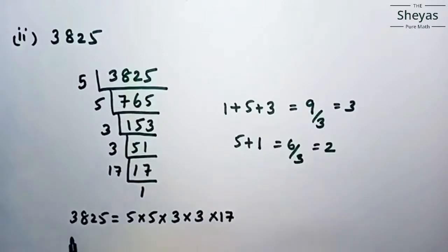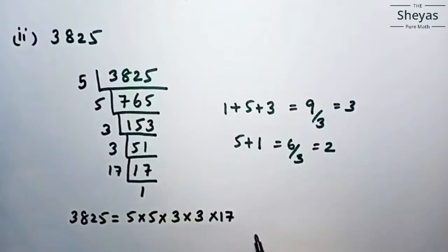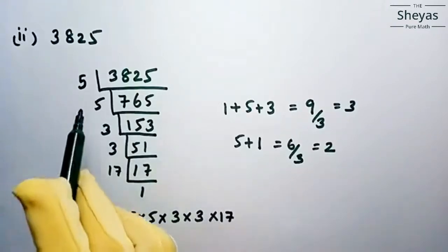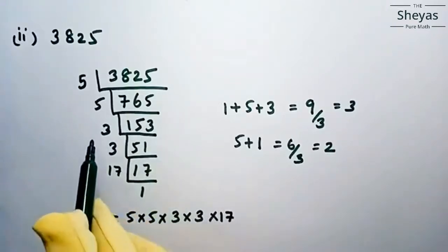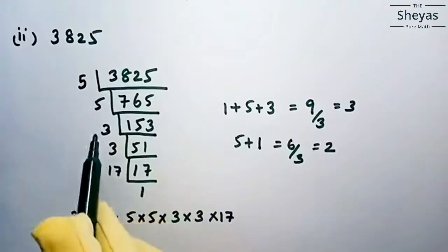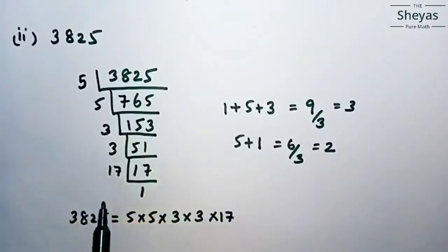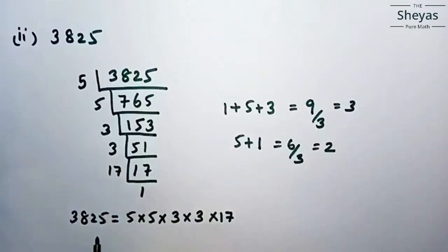So 3825 can be written as a product of its prime factors: 5 × 5 × 3 × 3 × 17. These are the prime factors of 3825, and we have expressed it as a product of its prime factors.